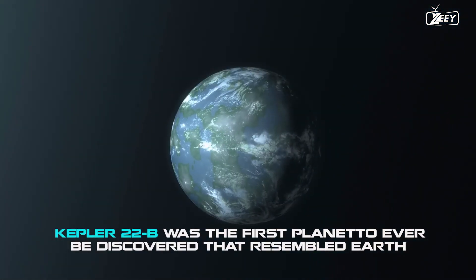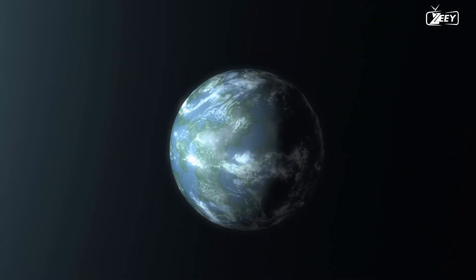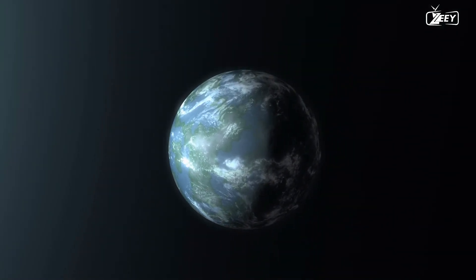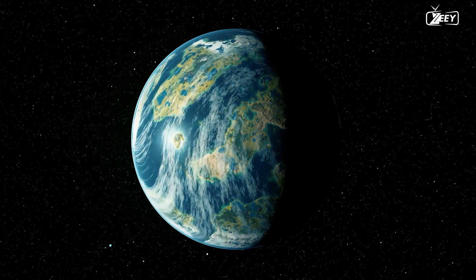Kepler-22b was the first planet to ever be discovered that resembled Earth. We now know that this extraordinary planet, which was discovered in 2009, is orbiting in the star that it calls home's habitable zone.